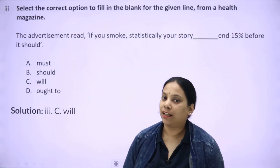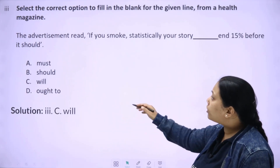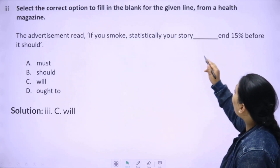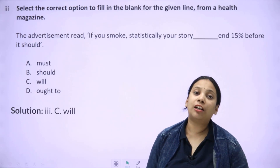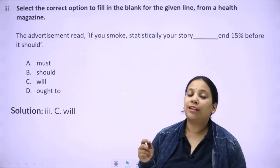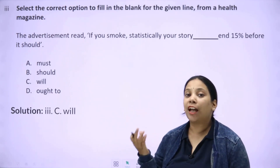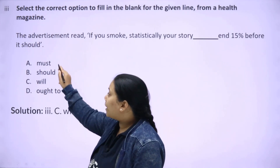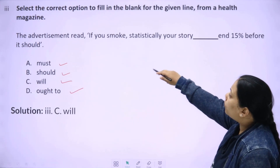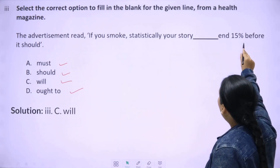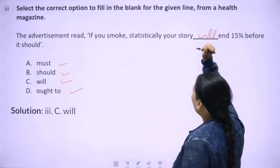The next question: 'The advertisement reads — if you smoke, statistically your story dash and 50 percent before it should.' You need to fill in a modal verb here. Remember — when something is completely confirmed or stated as a certainty, 'will' is used. The options are must, should, will, and ought to. Since the statement is a confirmed fact — 'if you smoke, statistically your story will end 50 percent before it should' — 'will' is the correct answer.